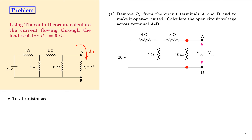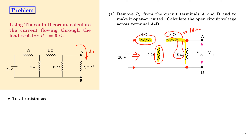We solve for the total resistance as viewed from the source end. The 4 ohm resistor is in series with the parallel combination of the 8 ohm and 10 ohm resistors. The 8 ohm and 10 ohm are in series, giving 18 ohm, and this 18 ohm is in parallel with the 4 ohm resistor. So the total resistance equals 4 plus the parallel combination of 4 ohm and 18 ohm.